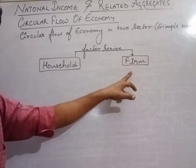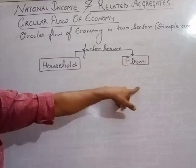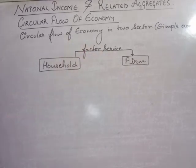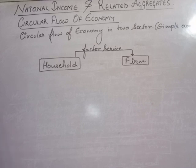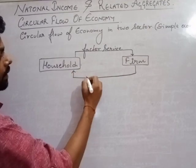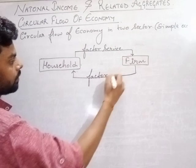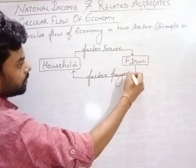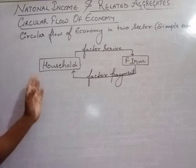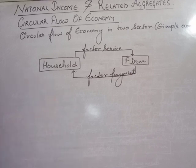In return, the firm provides factor payment to the household. This factor payment given by the firm to the household is called factor income. So household provides factor services to the firm, and the firm gives factor payment back to the household.